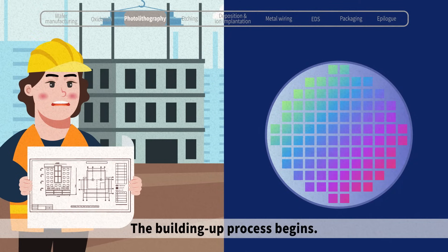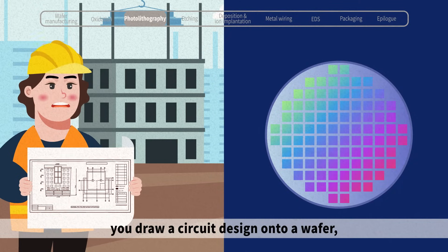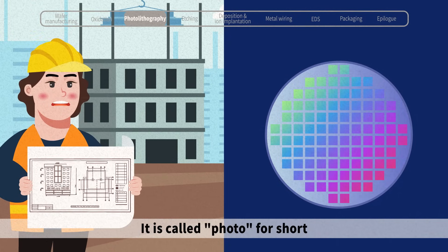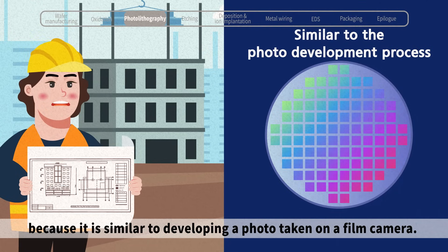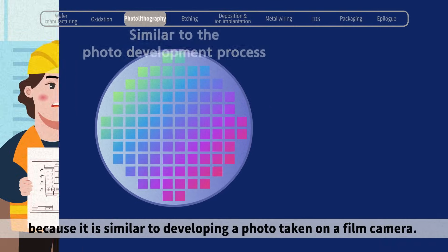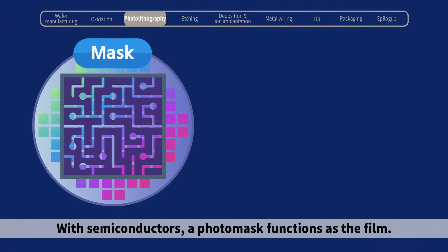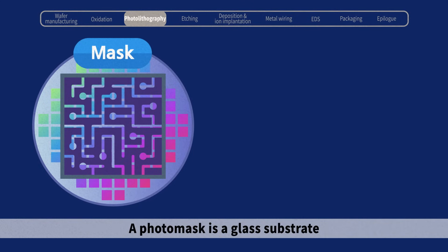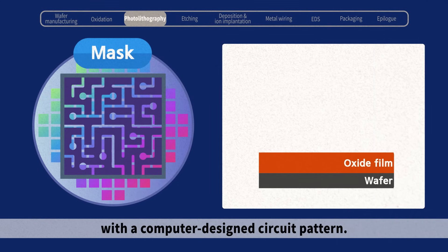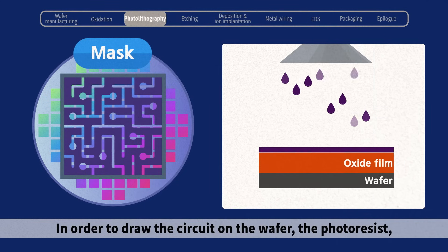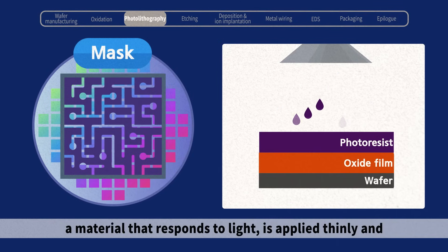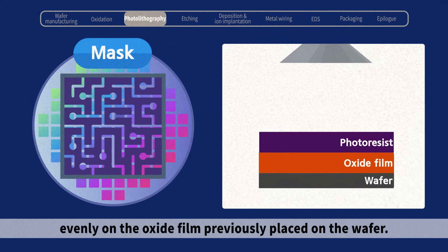The building-up process begins. Just as you draw blueprints to build a building, you draw a circuit design onto a wafer, which is called the photolithography process. It is called PHOTO for short because it is similar to developing a photo taken on a film camera. With semiconductors, a photo mask functions as the film — a glass substrate with a computer-designed circuit pattern. The photoresist, a material that responds to light, is applied thinly and evenly on the oxide film on the wafer.